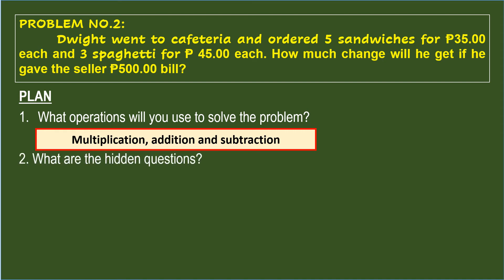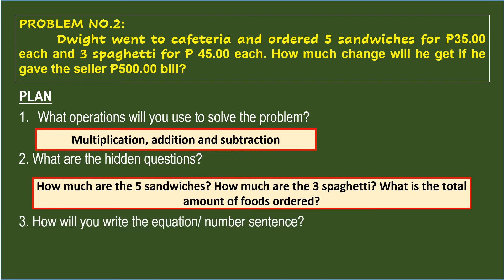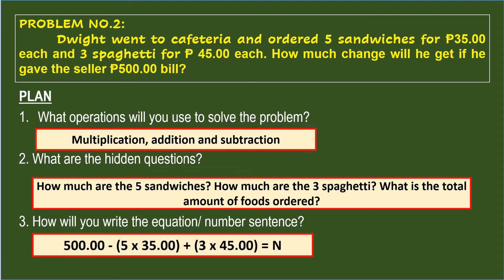The second question is: What are the hidden questions? Based on the given operations, the hidden questions are: How much are the 5 sandwiches? How much are the 3 spaghetti? And what is the total amount of food ordered? The equation or number sentence is: 500 − (5 × 35 + 3 × 45) = N.